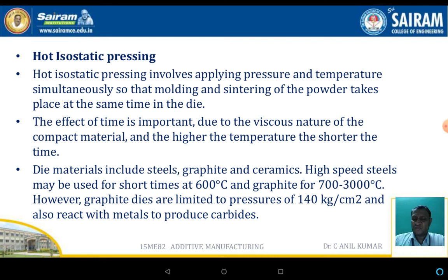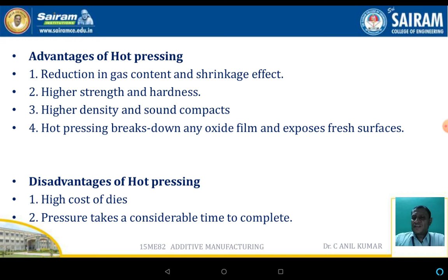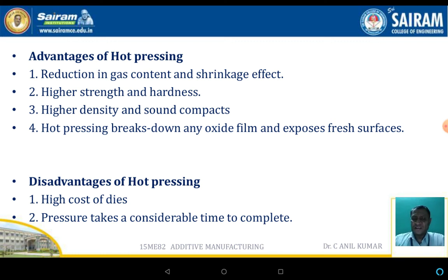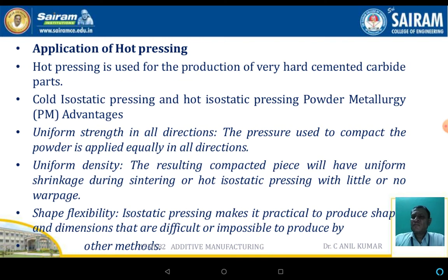Advantages of hot pressing include reduction in gas content, shrinkage effects, and the ability to achieve high strength and hardness. Densification is higher and the resulting components are sound and highly compacted. Hot pressing also breaks down the oxide film and exposes a fresh surface finish. The main disadvantage is high die cost and the considerable time required to complete the process. Hot pressing is used for the production of very hard cemented carbide cutting tools.